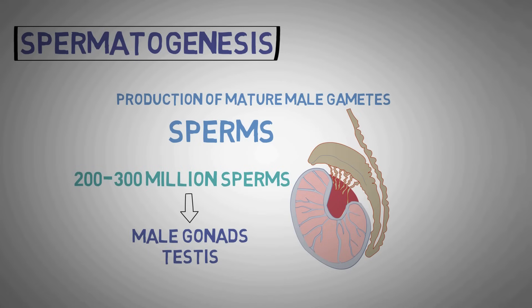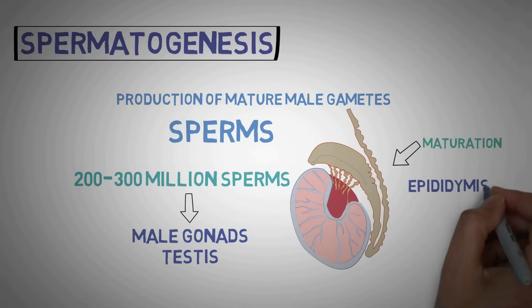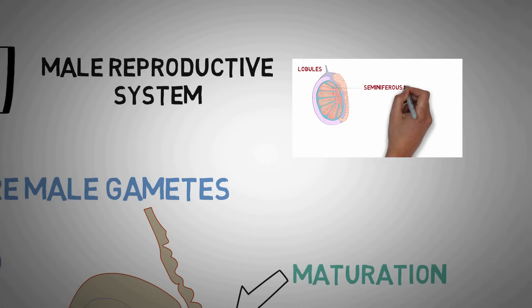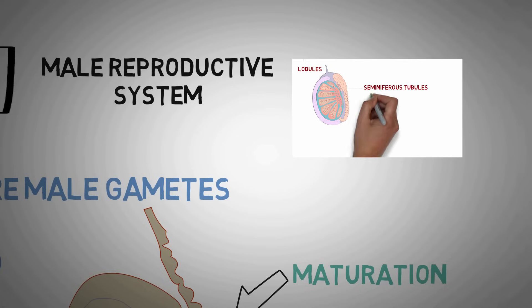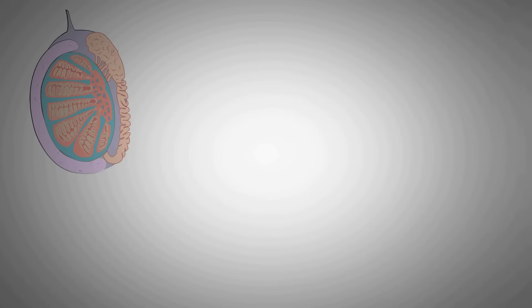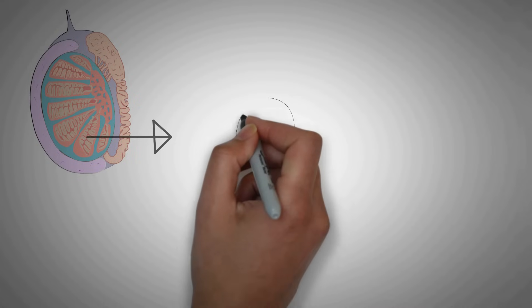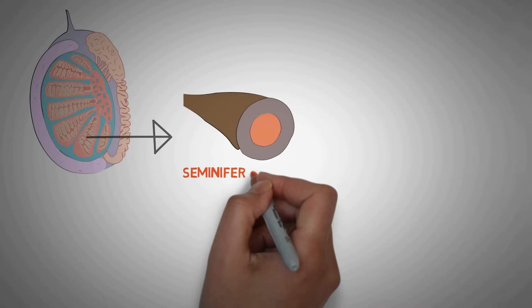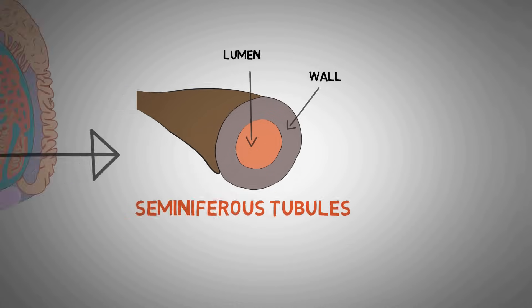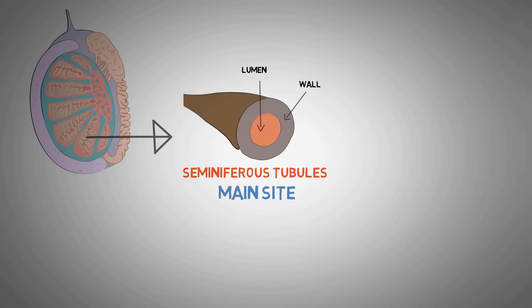These immature sperms also undergo a process of maturation in the epididymis to form the mature sperms. As we discuss the anatomy of the testes in the male reproductive system, the testes contain numerous pipe-like structures known as seminiferous tubules. The seminiferous tubules have a central lumen and outer wall, and the wall is the main site for the production of sperms.